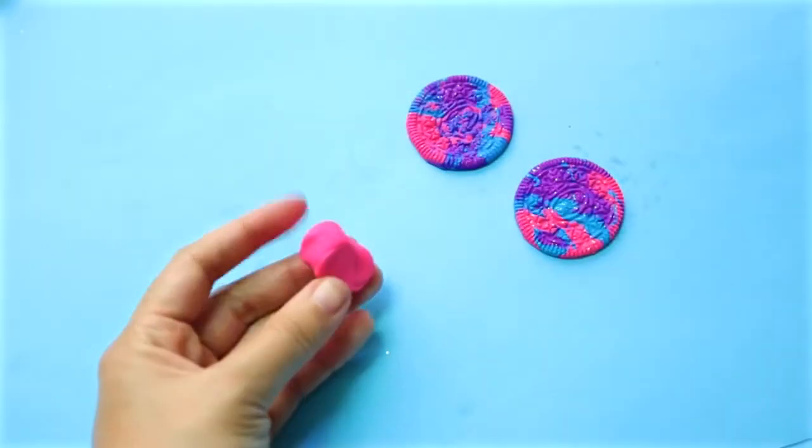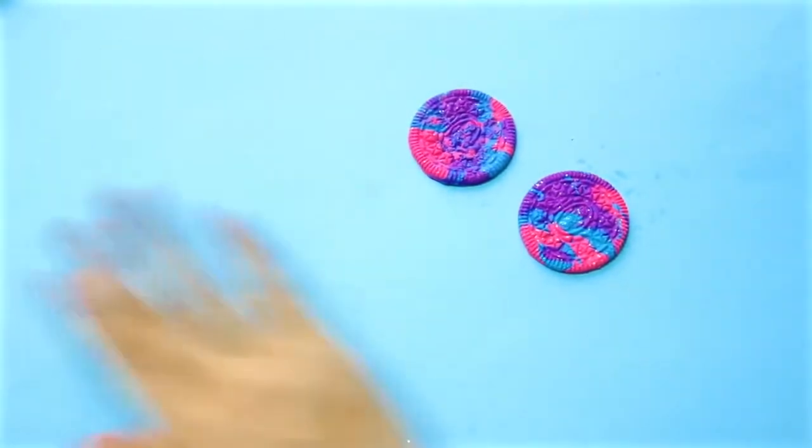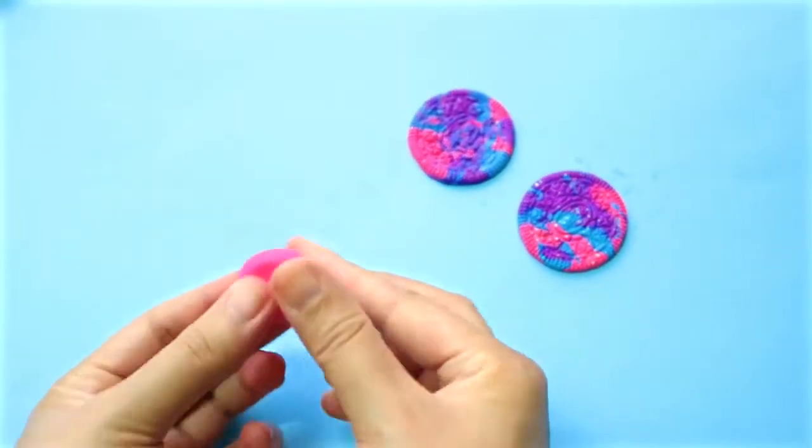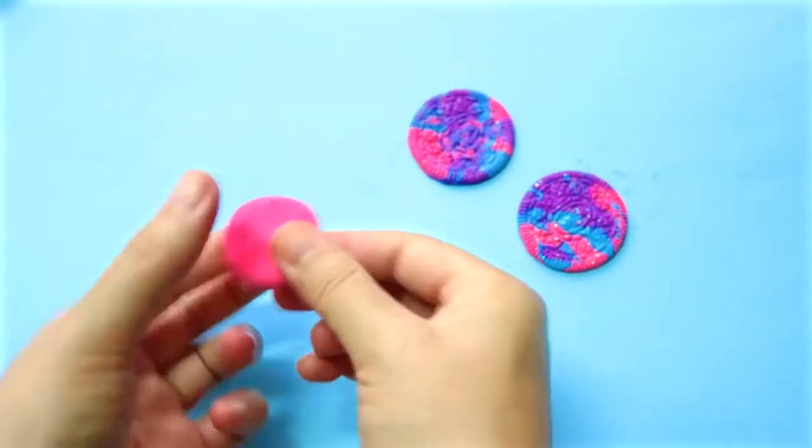To make the cream filling, I'm using some pink clay. Start by rolling it into a ball and then press it down to flatten it a little until you end up with a disc like this.